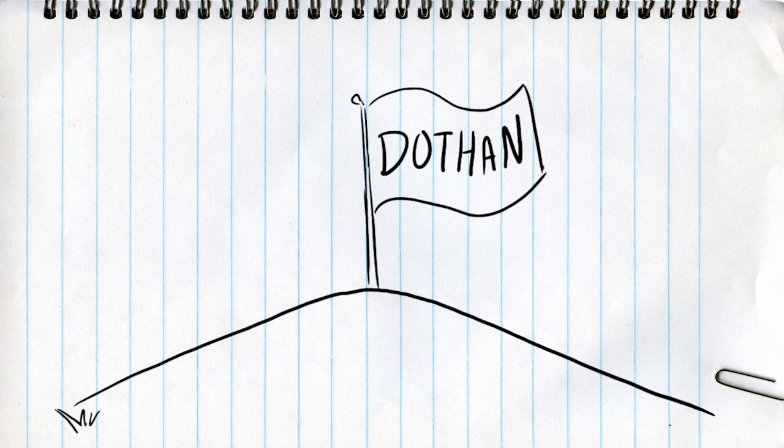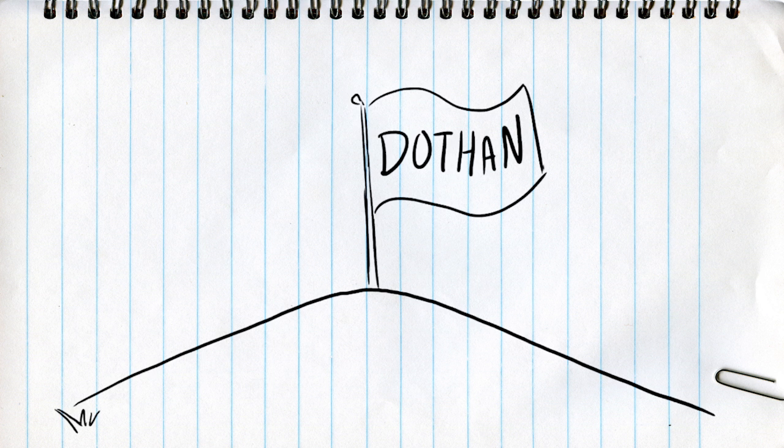He must not be any ordinary man. The king of Aram sent horses and chariots to surround Elisha's town. He planned to stage a violent showdown.